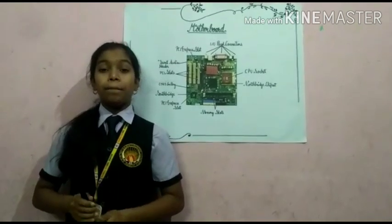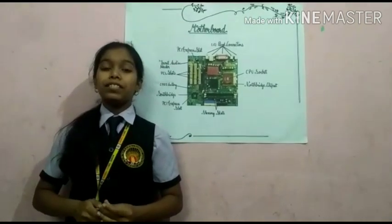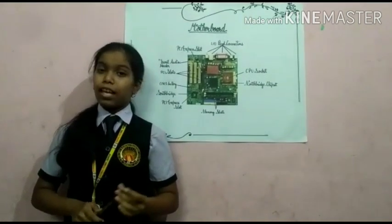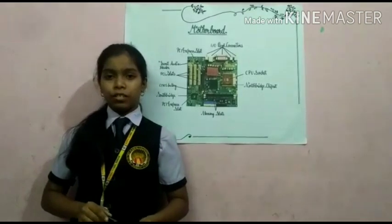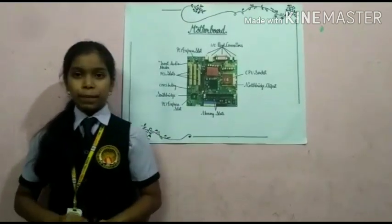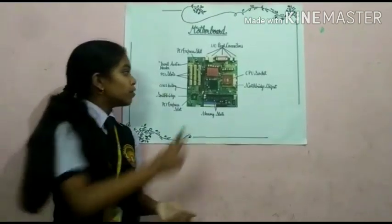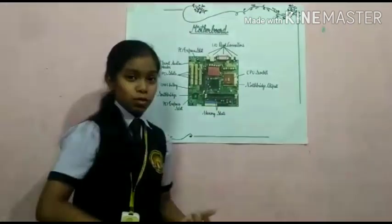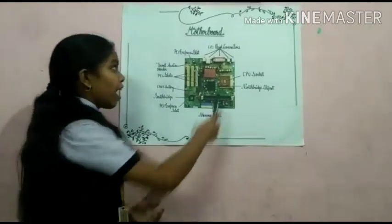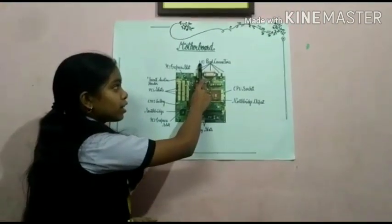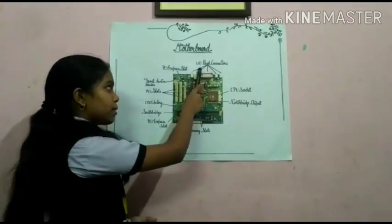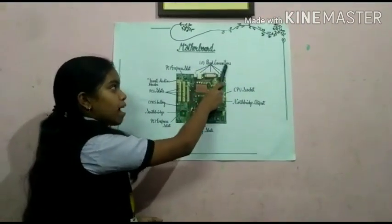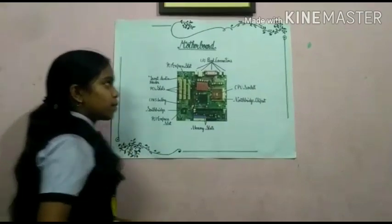The chipset is also there in the motherboard. Now let's move on to the picture of the motherboard. Here I have labeled the I/O — that means input and output panel connectors — where the wires are connected to the motherboard.